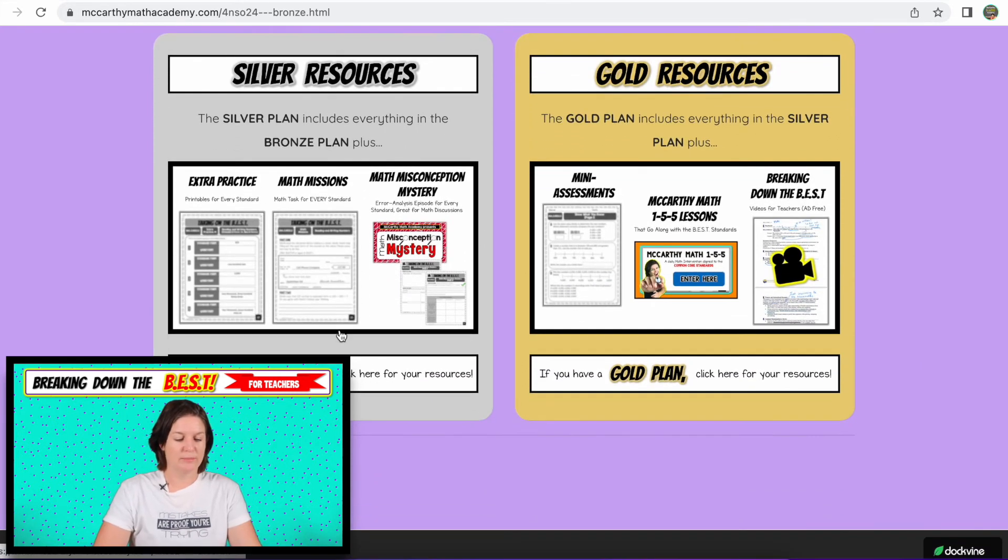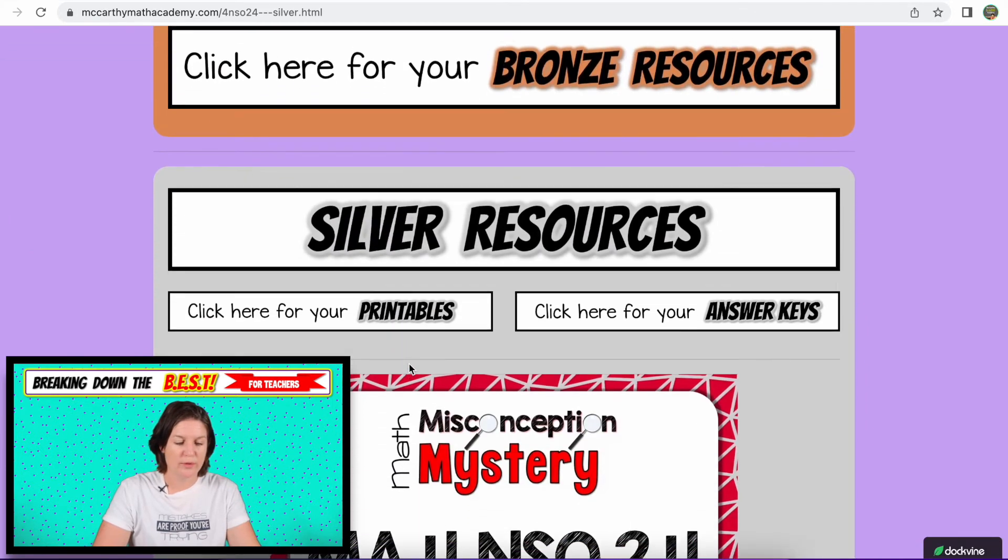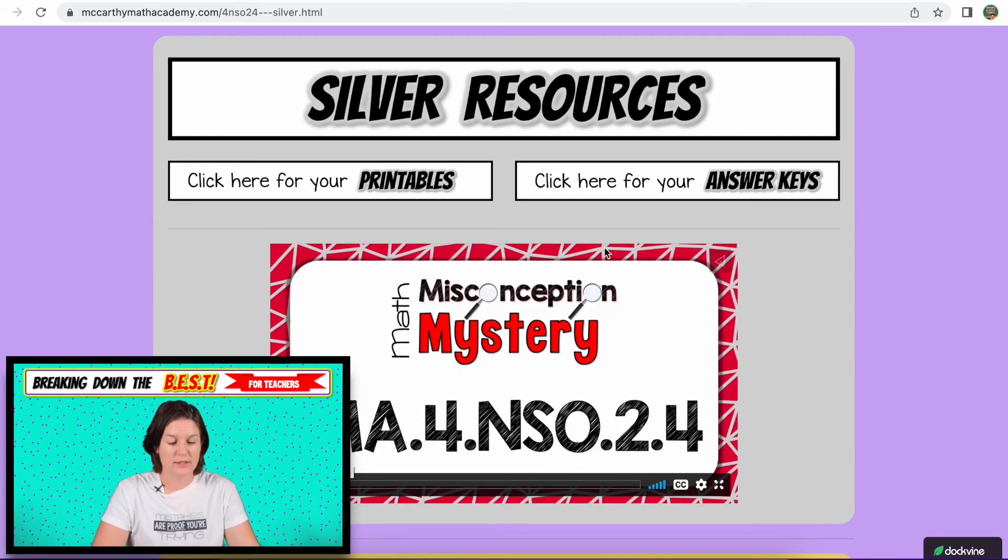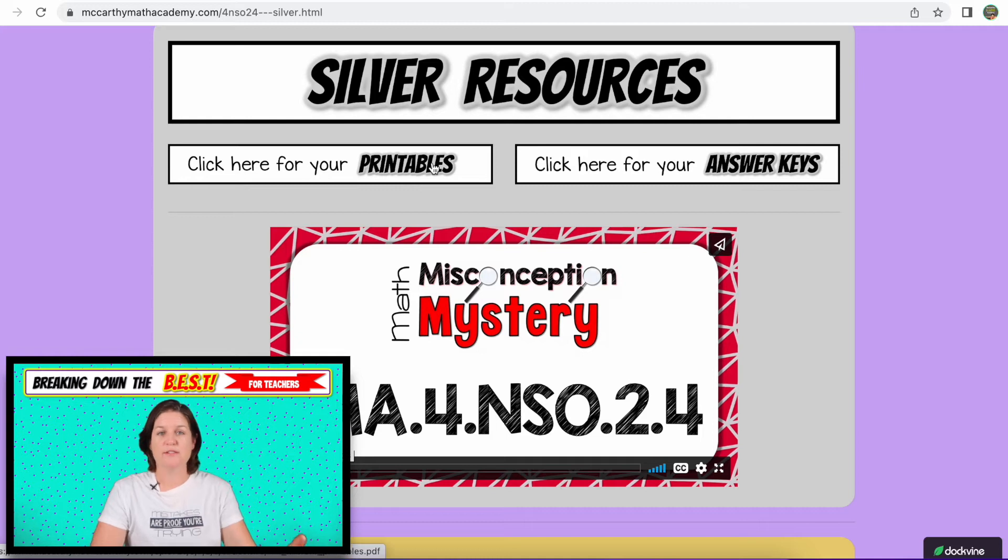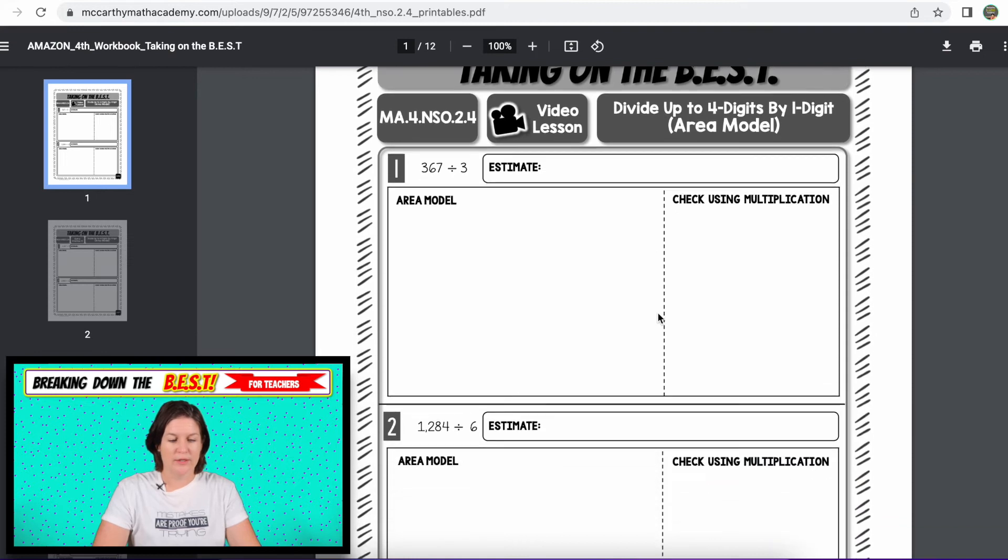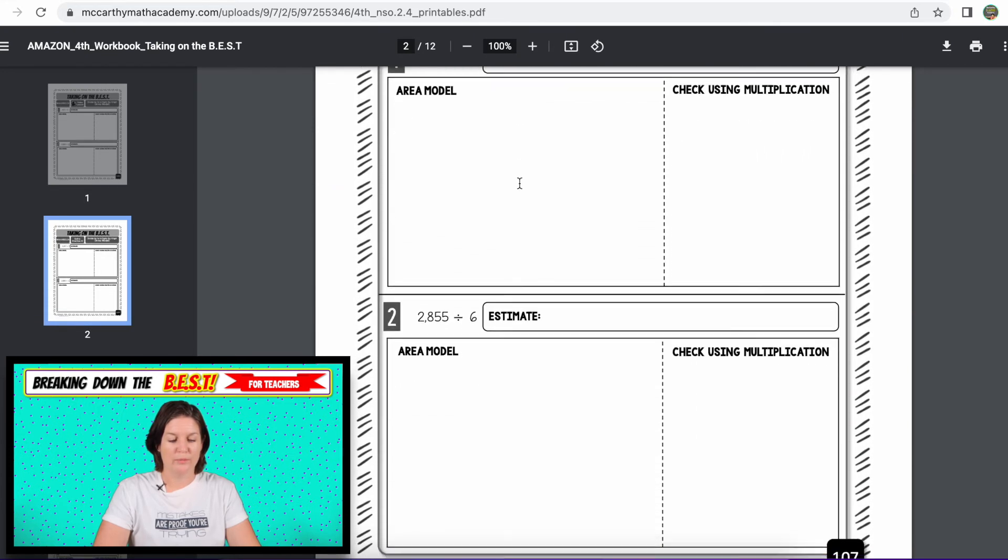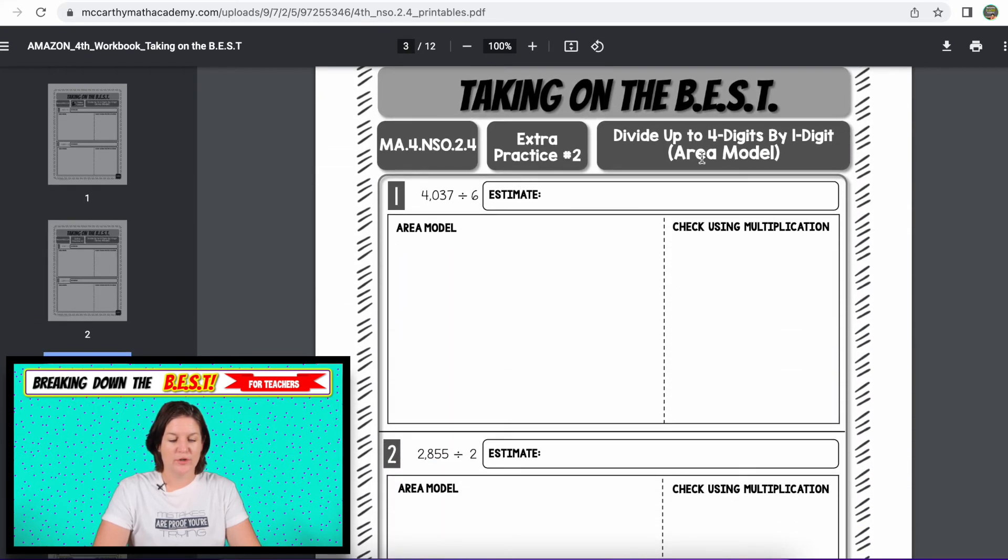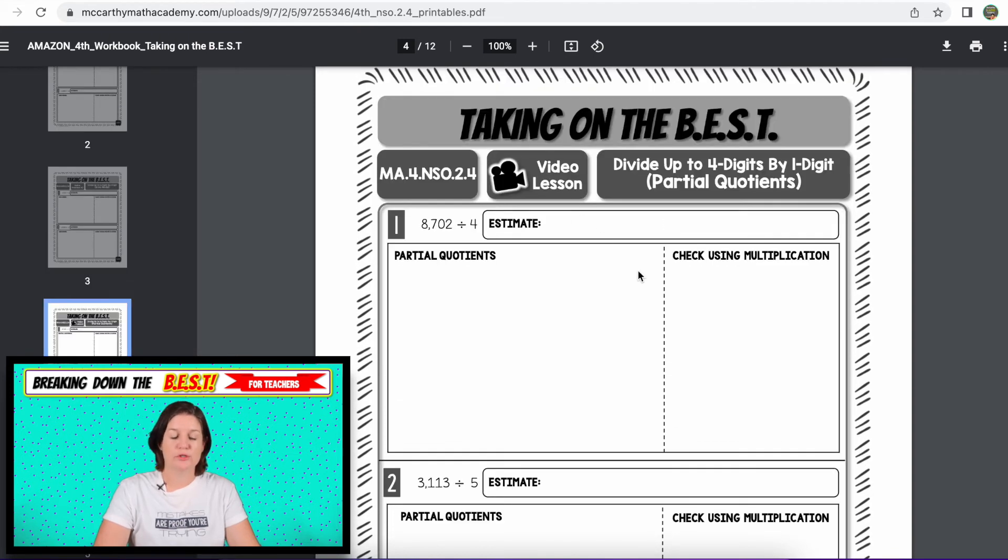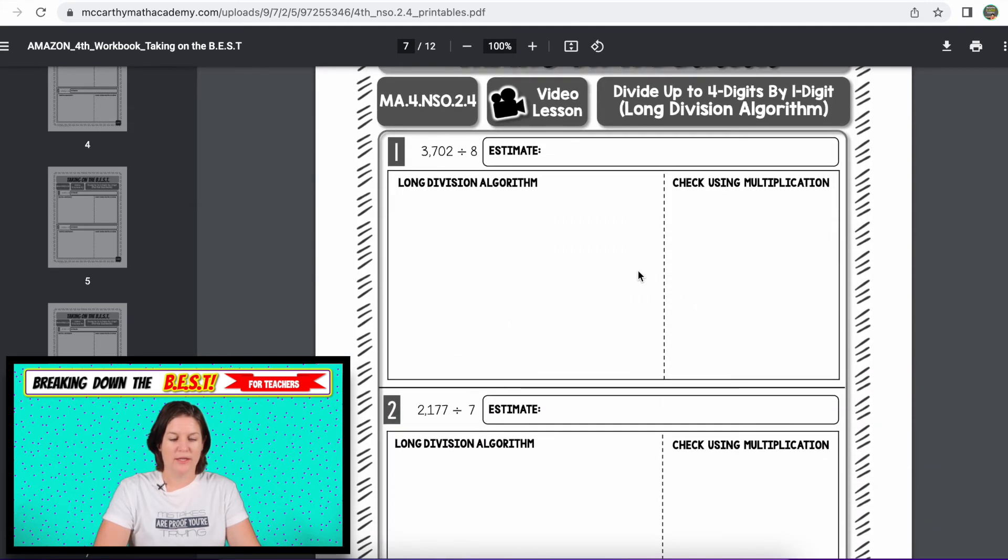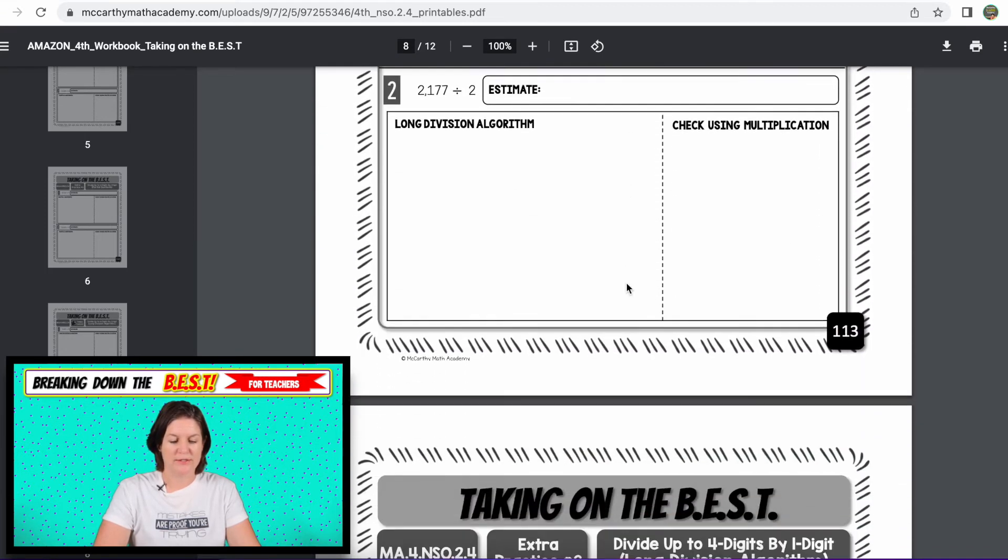So then if you have the silver package, you know that you have access to more resources. Let me just show you what you have access to. Of course, you have access to your bronze resources, which are the video lessons and the printable student guides. Then you have extra practice, math missions, math misconception mystery in the printable section with your answer keys and this video. So here is the video lesson. Then there's practice with the area model. Then there's the video lesson for partial quotients with a couple extra practice sheets that follow. Then long division video lesson, the extra practice that follows.